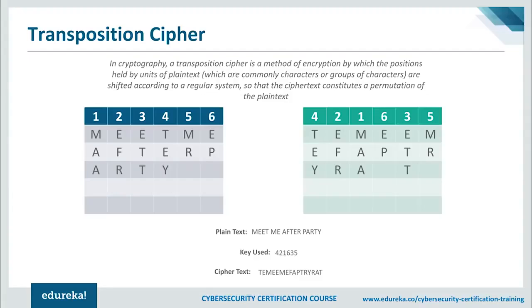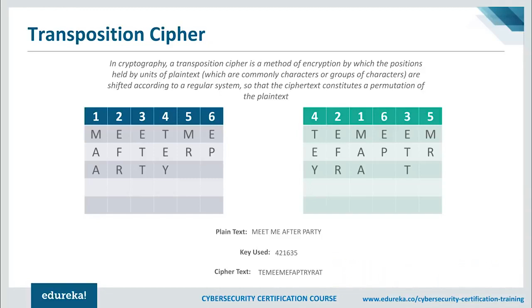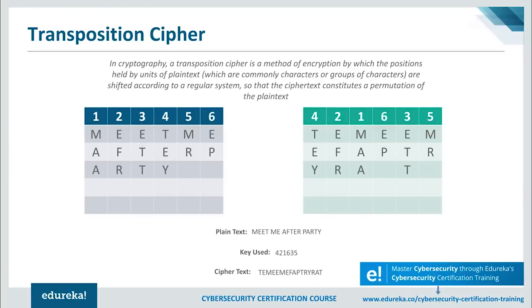In cryptography, a transposition cipher is a method of encryption by which the positions held by units of plaintext — commonly characters or groups of characters — are shifted according to a regular system, so that the ciphertext constitutes a permutation of the plaintext. Mathematically, a bijective function is used on the character positions to encrypt and an inverse function to decrypt. For example, the message 'meet me after the party' is arranged in an encryption matrix divided into six rows and columns, with a key of 421635, and rearranged to produce the ciphertext.